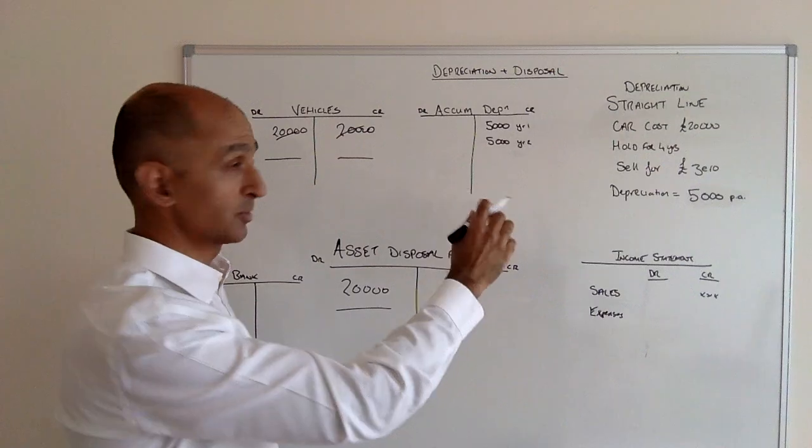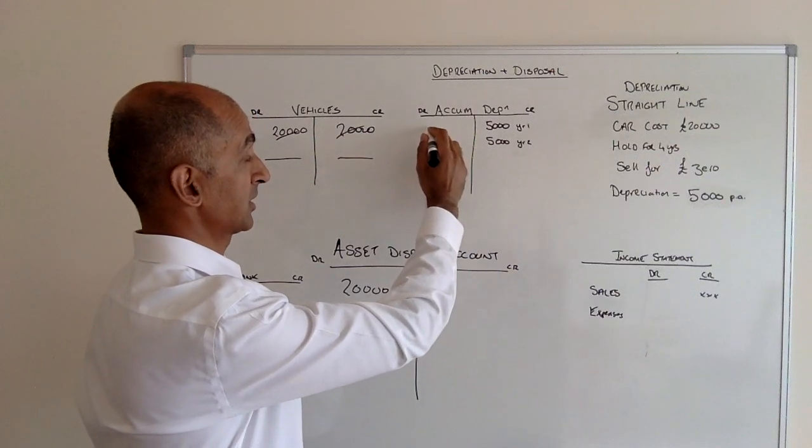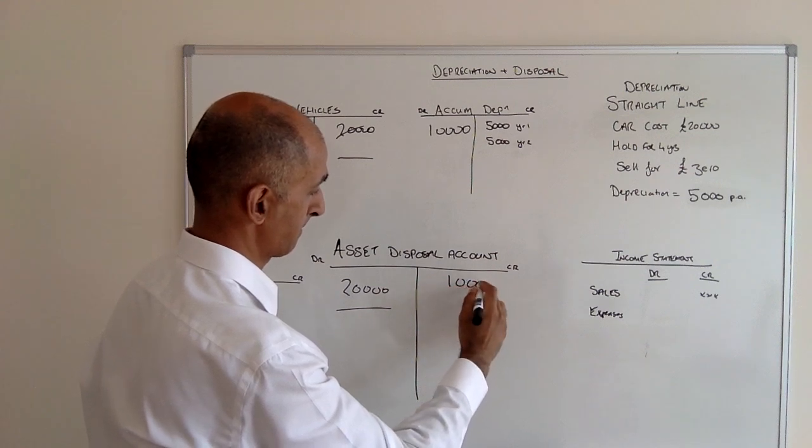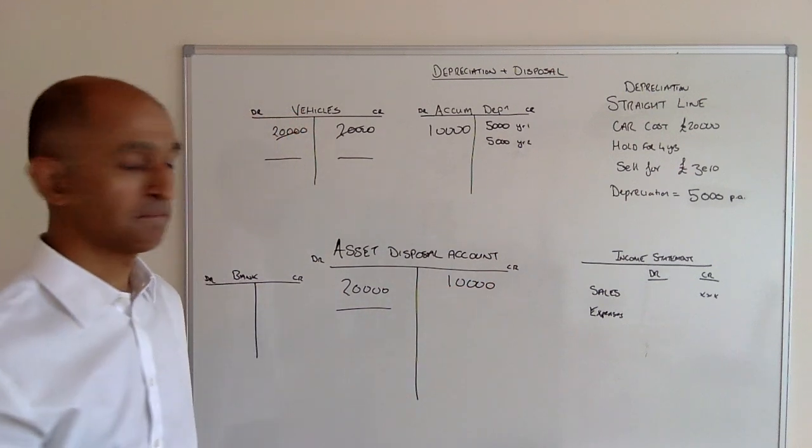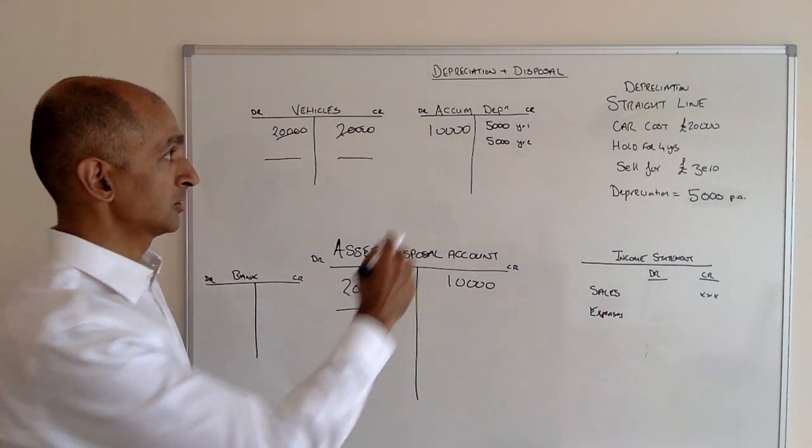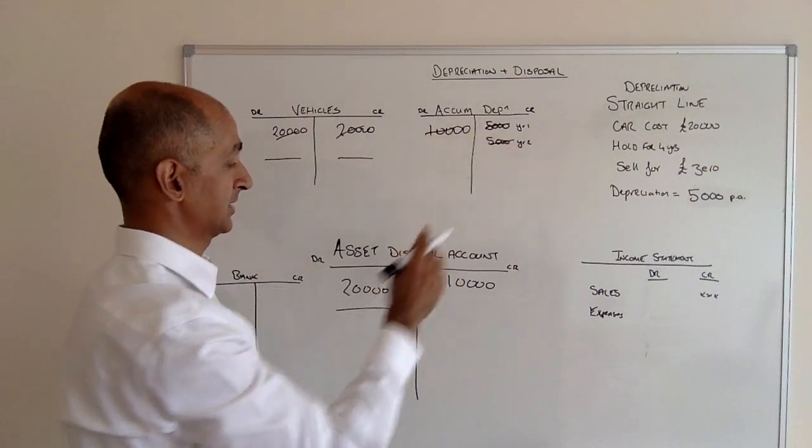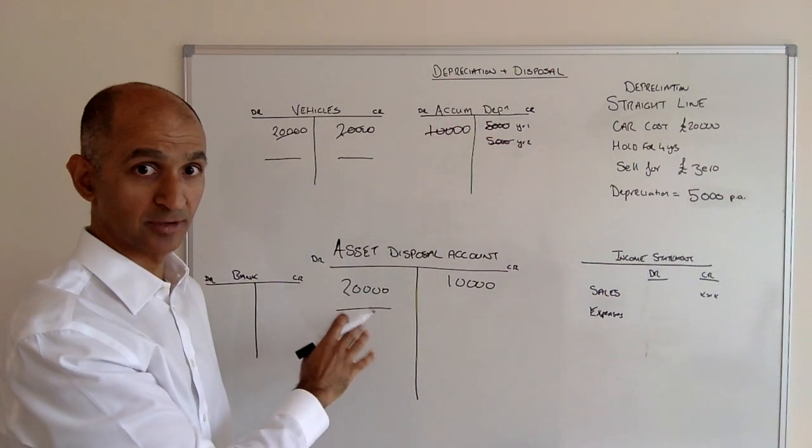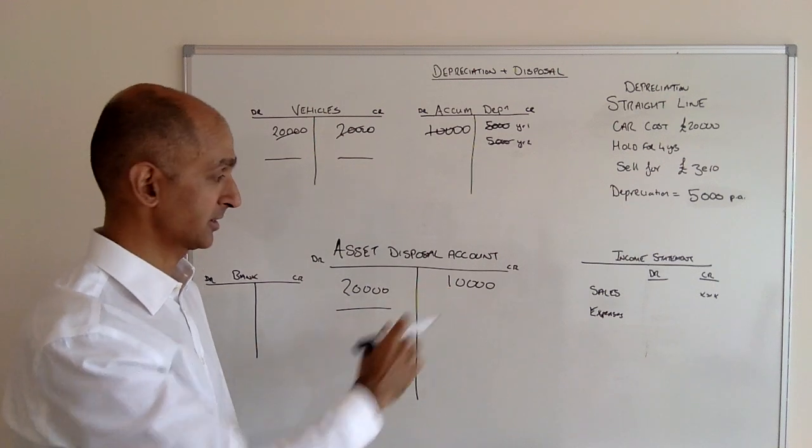The accumulated depreciation would do exactly the same thing. We have to do £10,000 on this side and put £10,000 here. So that asset is now sitting in the asset disposal account. We have £20,000 of cost and £10,000 of accumulated depreciation.